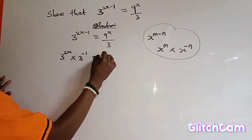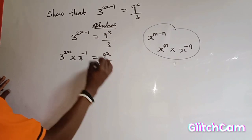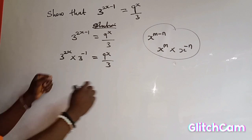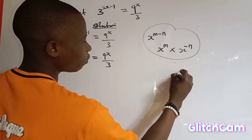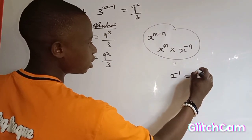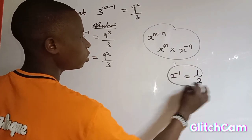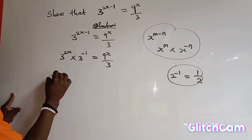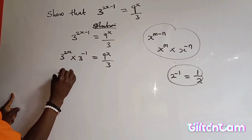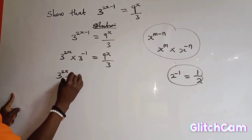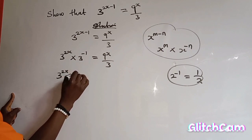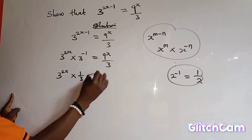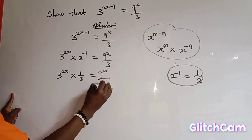Which is equal to 9s over 3. Next, since 2 to the power of minus 1 can also be written as 1 over 2 — we are going to apply this rule here. So I have 3 to the power of 2s multiplied by 1 over 3, which is equal to 9 to the power of s over 3.